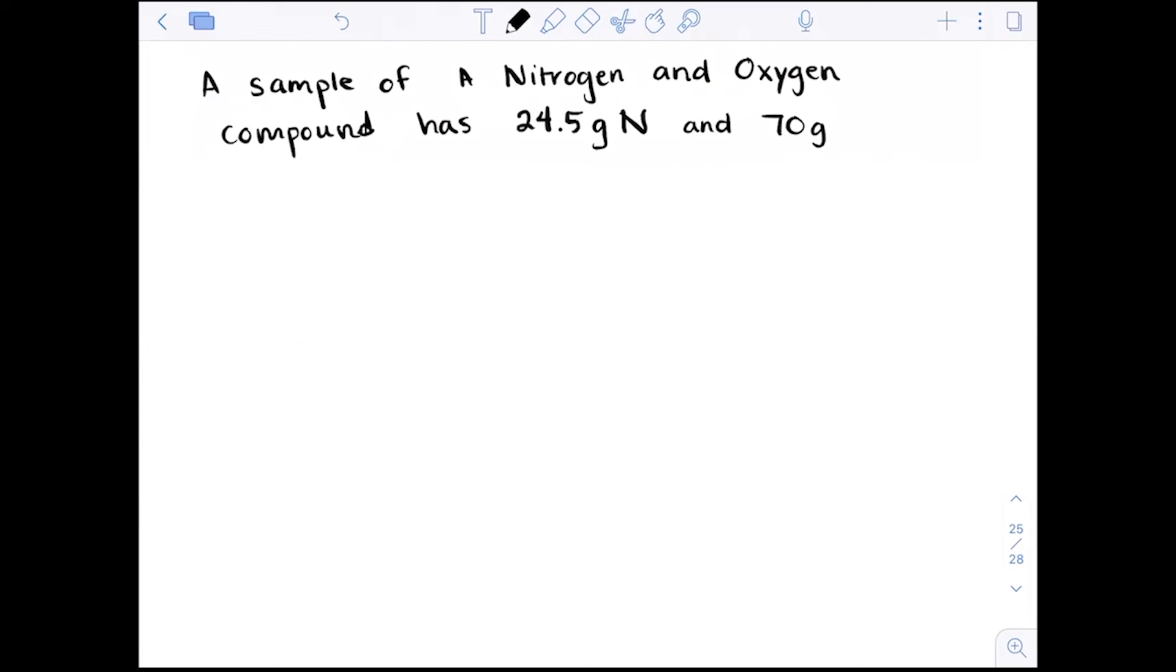Okay. Now in determining a chemical formula, that's if we have the chemical formula we can utilize it. If we don't have the chemical formula, say we have component data like this: a sample of a nitrogen and oxygen compound has 24.5 grams of nitrogen and 70.0 grams of oxygen. What is the empirical formula?